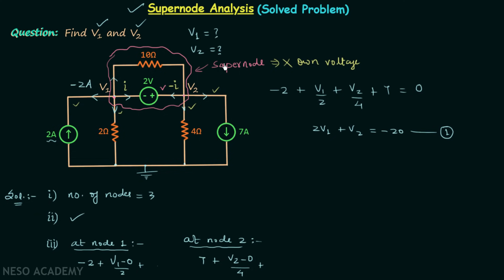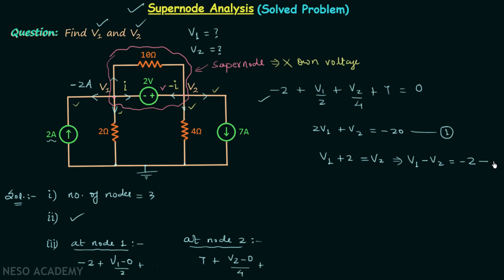KCL alone gives only one equation, so in super node analysis we also apply KVL to obtain the second equation. Applying KVL from node 1 to node 2 through the voltage source gives V1 plus 2 equals V2, which simplifies to V1 minus V2 equals minus 2. This is equation number 2. We now have two equations and two unknowns, V1 and V2.